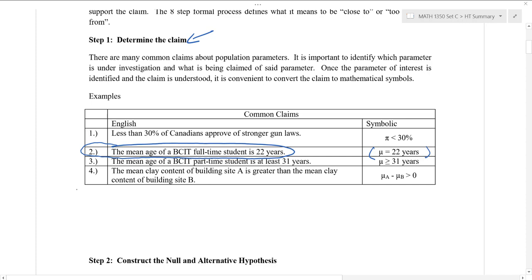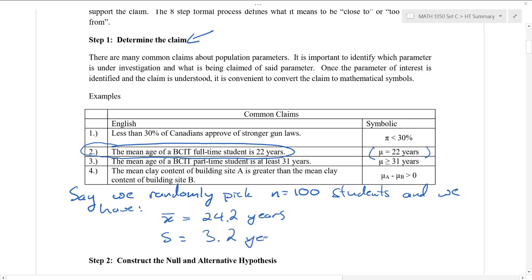Maybe to put this in context, let's say we did some sampling. Let's say we randomly picked a number of students. Maybe n equals 100. And maybe after doing that sample, we can come up with a sample mean x bar. Say we get 24.2 years for x bar with a sample standard deviation of 3.2 years. So based on our sample, we got a mean of 24.2 years. We would like to use this information from our sample to address the claim that the population mean mu is 22 years.